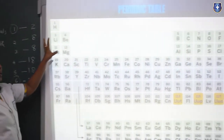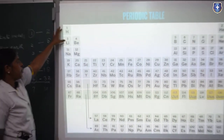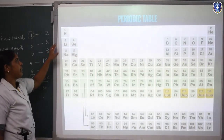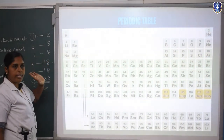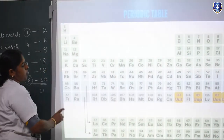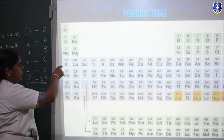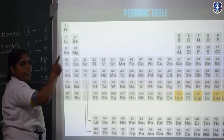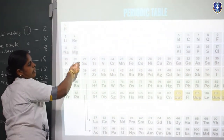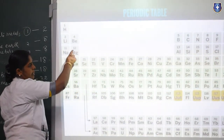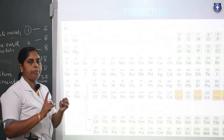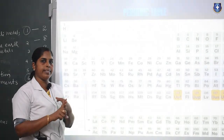Let's see the properties of groups. In a group, members possess the same chemical properties because their valence shell electrons are the same. In the case of physical properties, as the atomic number increases going down the group, there is a variation in physical properties like melting point, boiling point, and density.